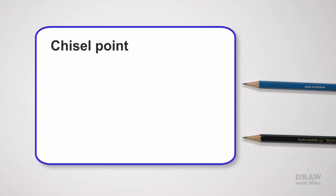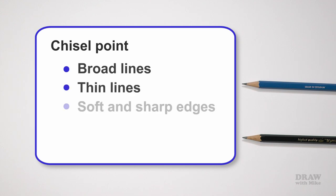The flat face of a chisel point draws broad lines, then just rotate the pencil and you can draw thin lines with the edge. The broad lines are soft edged and the edge lines are sharp and hard, and until the length wears down each use of the flat face sharpens the edge.